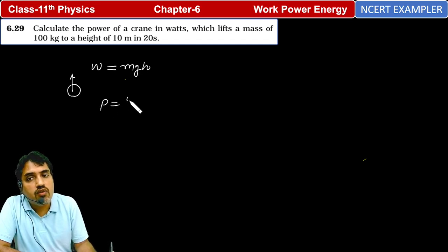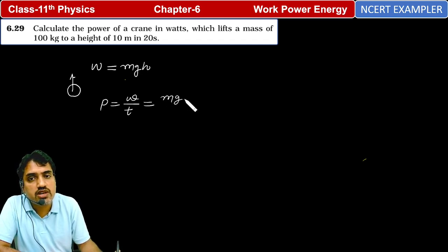And power is work done per unit time. So here we have m value given, g value we have as 9.8, h value is given, and t is given.